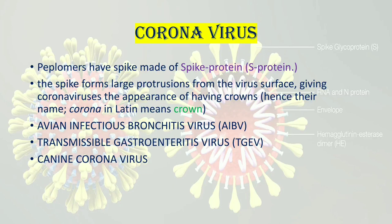Discussing some important features: coronaviruses have spikes made of spike protein, that is S protein, which we will discuss later on. The spikes form large protrusions from the virus surface, giving coronaviruses the appearance of having crowns, hence their name 'Corona,' meaning crown in Latin.